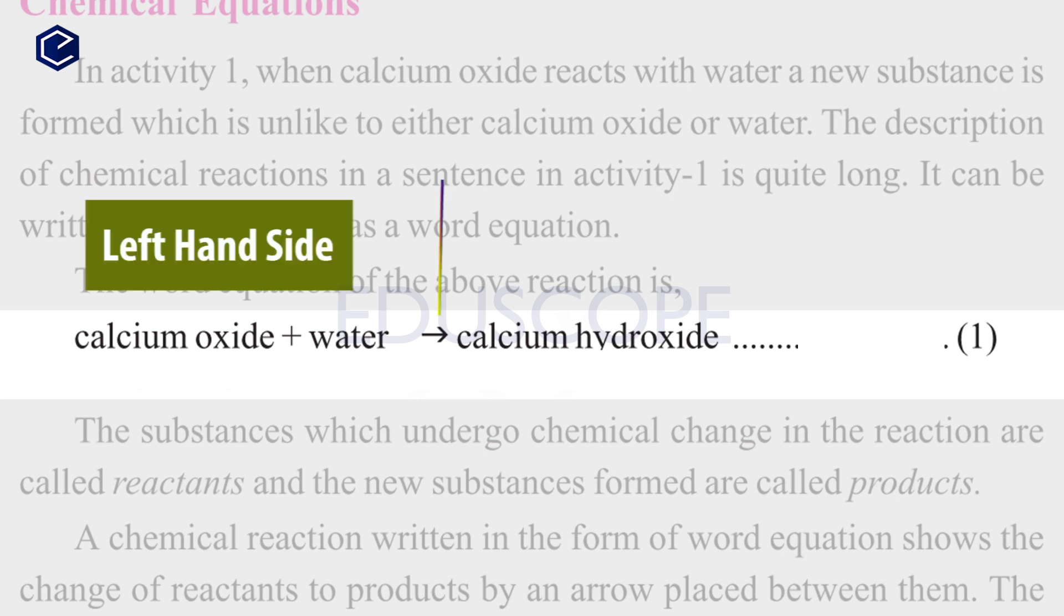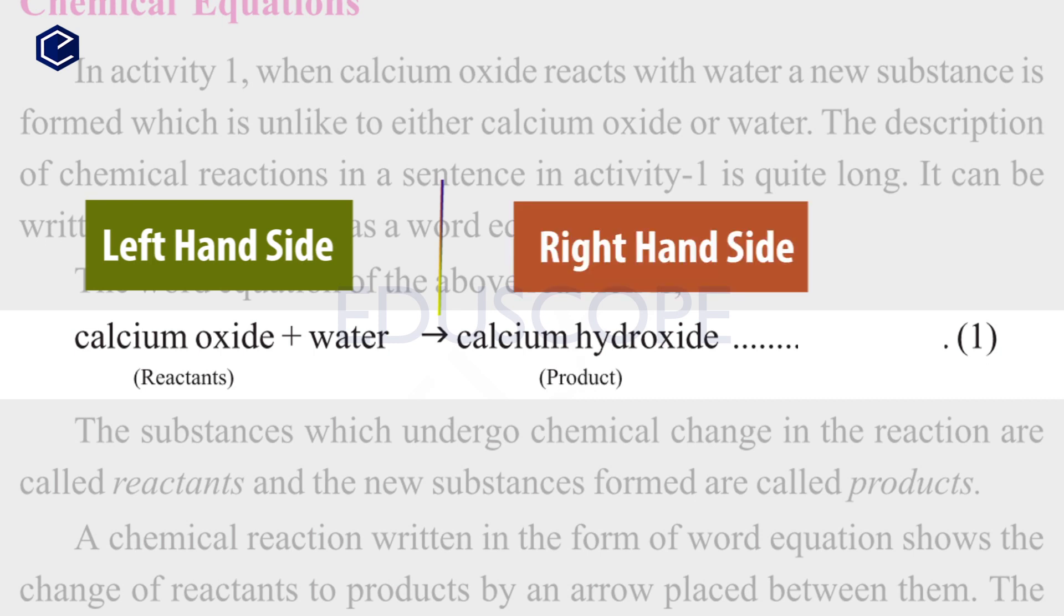When writing an equation, the starting substances are called reactants. The reactants are written on the left-hand side of the equation. Here, calcium oxide and water are the reactants, so we write them on the left-hand side. On the right-hand side, we mention the final products formed in the reaction. The final product formed in this reaction is calcium hydroxide.